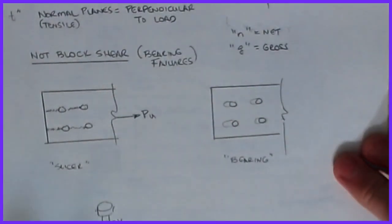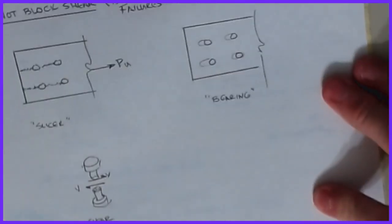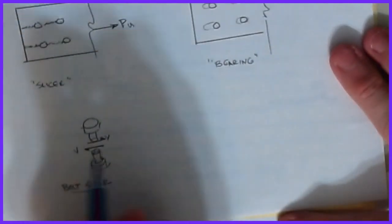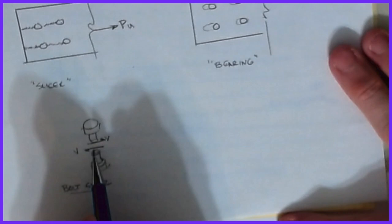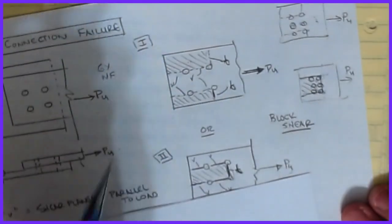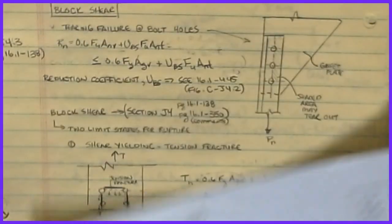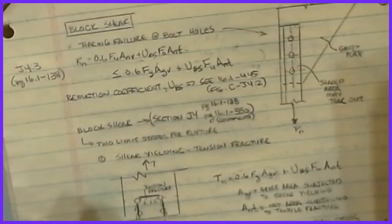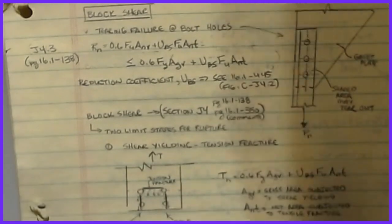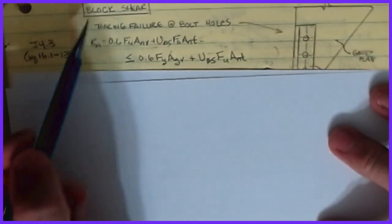The last one is simply breaking the bolt in two — that's a bolt shear phenomenon covered in a different video. For today, we're going to focus on identifying and calculating the two block shear cases. Once you've identified the phenomenon, you can do some basic calculations. The block shear formula is a bit involved but manageable — it's defined as a tearing failure at the bolt holes, covered under AISC Section J4.3 of the specification.